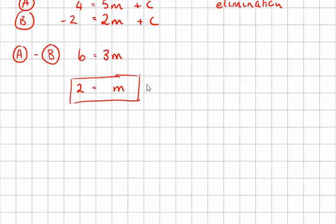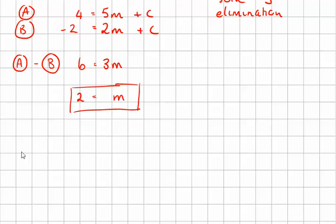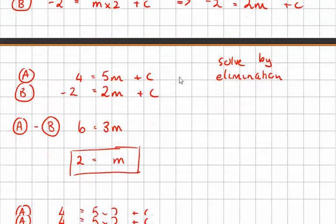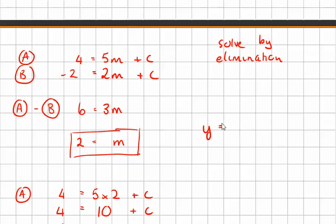Now what do we do? I can go to A or B. I'm going to choose A because it's got no negatives. So 4 equals 5 times 2 plus c. So what do I do now to find c? C is -6. So we think the equation that links both those points is y equals 2x minus 6. And it's always worth checking.